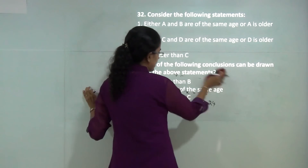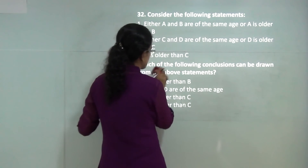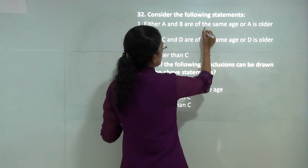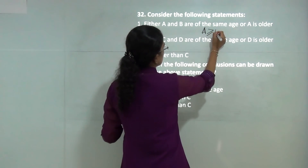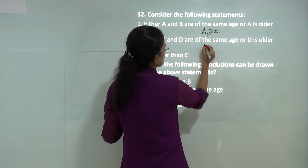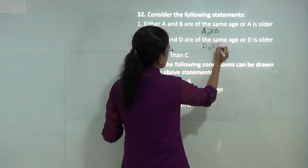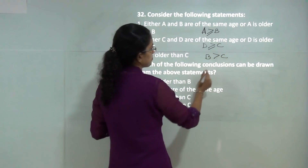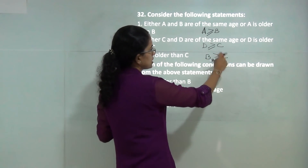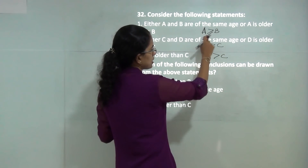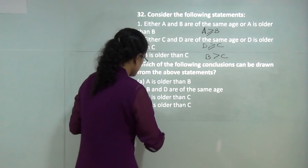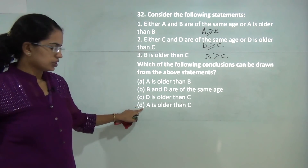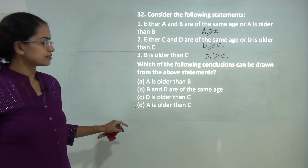For the next question, I can derive three equations from the statements. The first equation is A is older than or equal to B, B is older than or equal to C, and B is older than C. Since B is older than C, A would definitely be older than C as well. So D would be the correct answer.